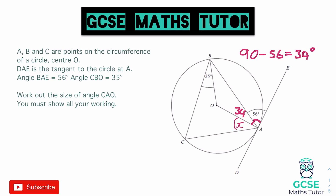Now we need to look at where we can go with that. This triangle here is a certain type — it's made up using two radii, so it's an isosceles triangle, and the base angles in the isosceles are equal. If we mark those equal sides, we know the other base angle is also 34 degrees. Then using angles in a triangle: 180 minus 68 equals 112 degrees at the centre.